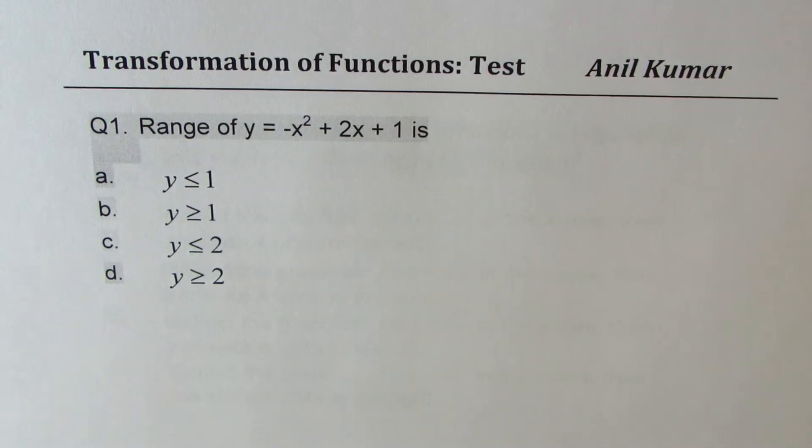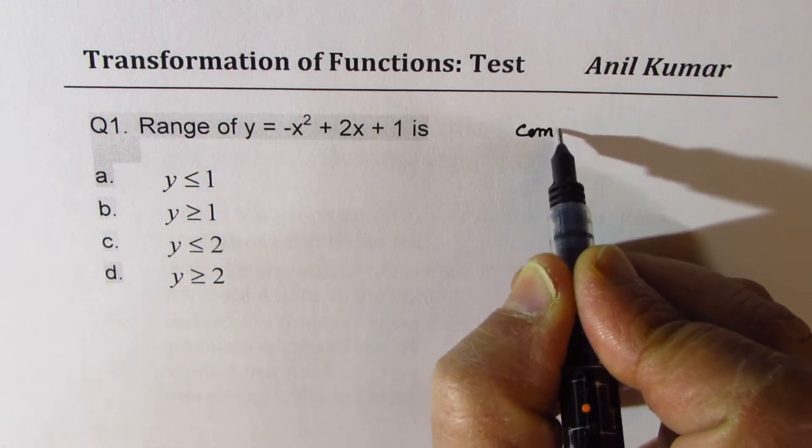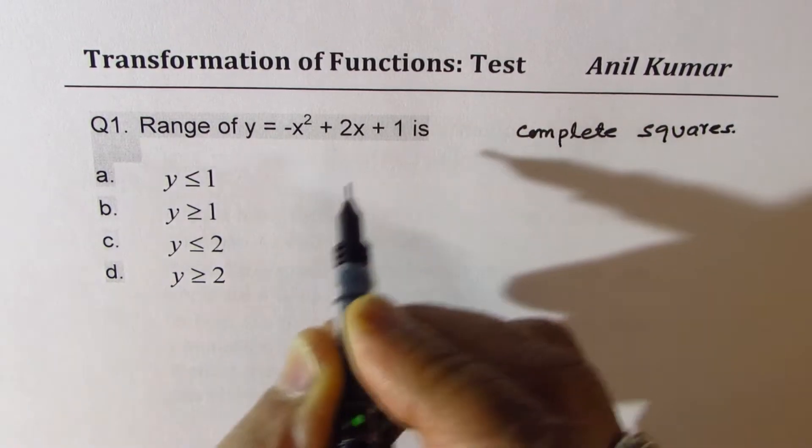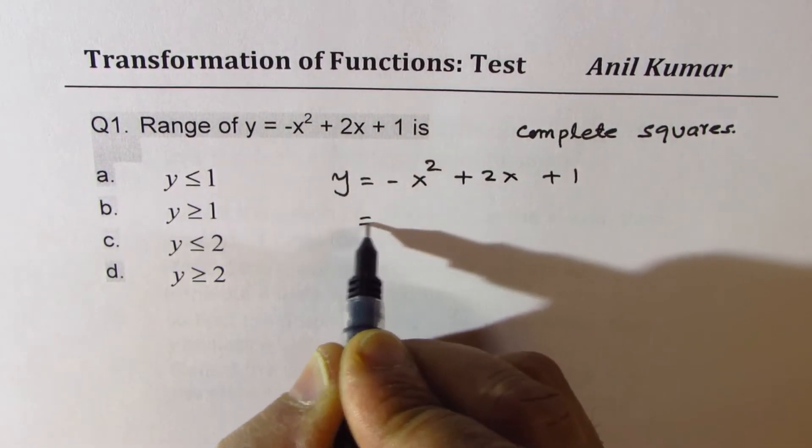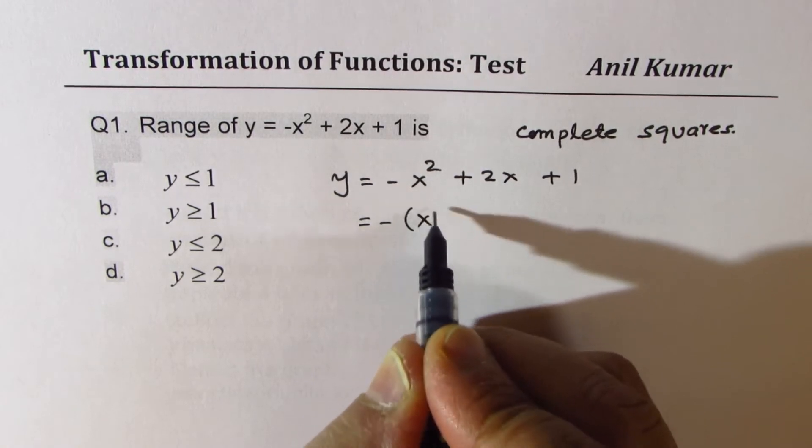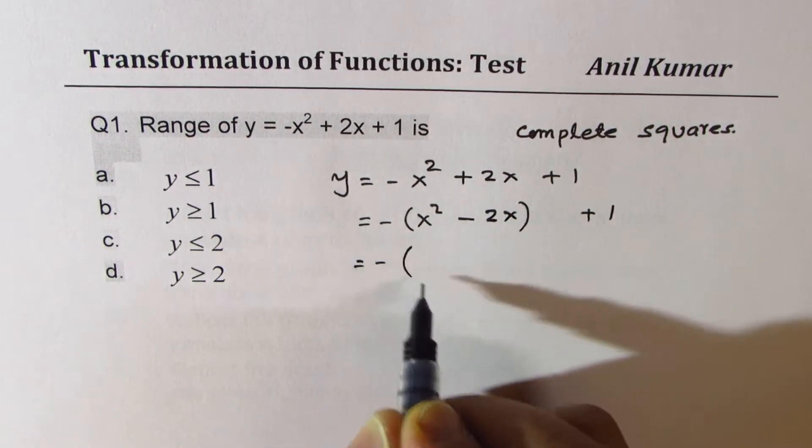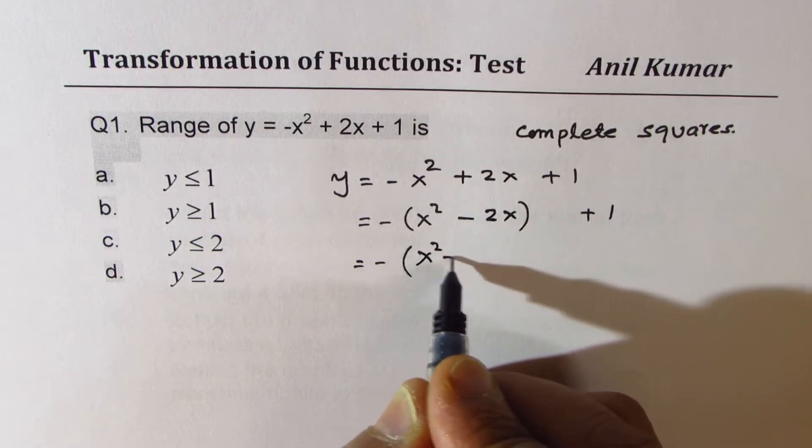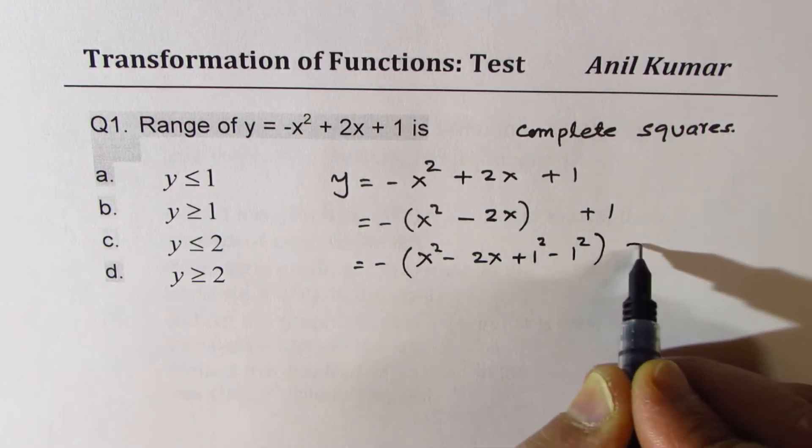Now, here are my solutions. Question number one, range of y equals to minus x square plus 2x plus 1. So we need to complete squares to get the range. We have y equals to minus x square plus 2x plus 1. Let's take minus common. So we get x square plus becomes minus 2x. Keep this one separate. Now, next step is, we'll add and subtract half of 2, which is 1 square. So we'll add plus 1 square and minus 1 square, plus 1.